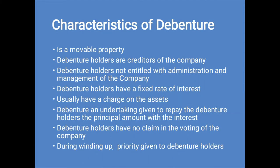Let us see what are the characteristics of a debenture. A debenture is a movable property. It is in the form of a certificate of indebtedness of the company, issued by the company itself. The debenture holders are creditors to the company and they do not have any claim of ownership of the company, unlike the shareholders. As the debenture holders are not the owners of the company, they are not entitled to the administration and management of the company. Debentures have a fixed rate of interest on the principal amount which they get every year, irrespective of the financial condition of the company. Debentures usually have a charge on the assets of the company, which means that if the company on liquidation is not able to repay the amount, debenture holders can sell the property of the company to recover the money.